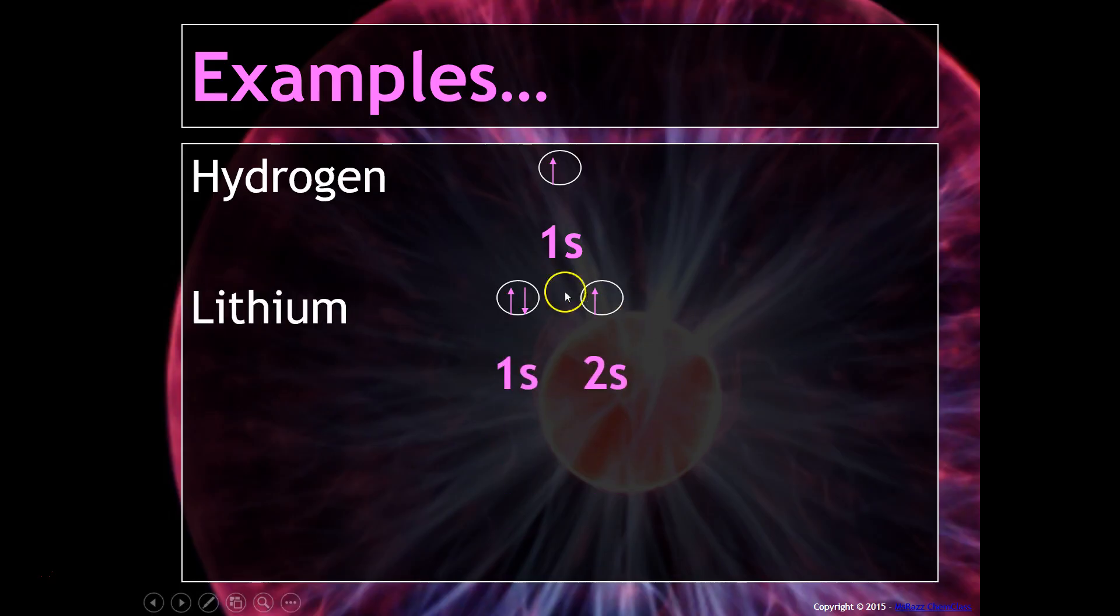This is lithium. Notice that lithium includes both the circles and the labels. Notice there's no number of electrons written in the upper right-hand corner. You do want to make sure that you avoid writing the electrons in the upper right-hand corner because these are orbital notations.